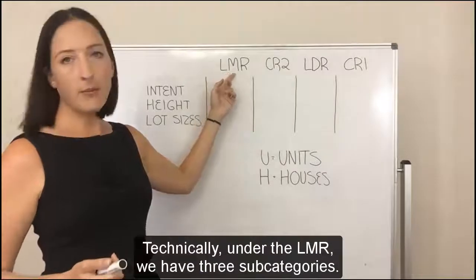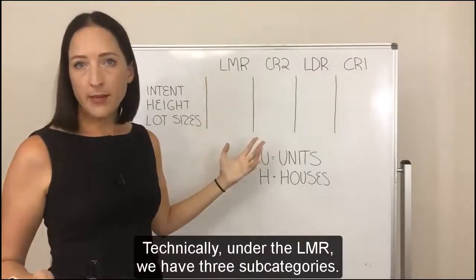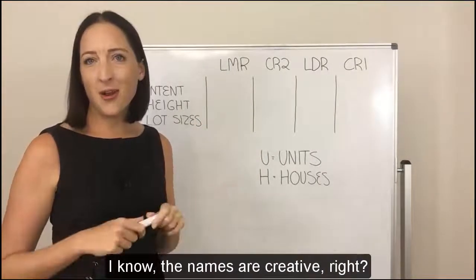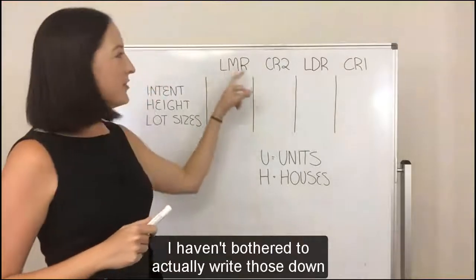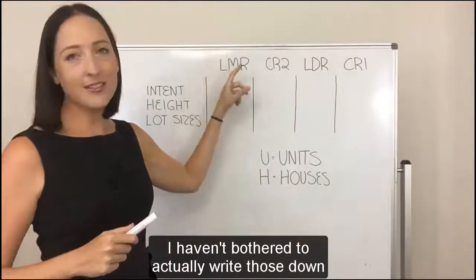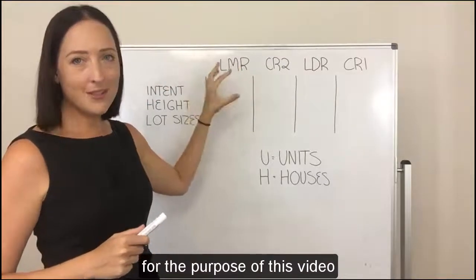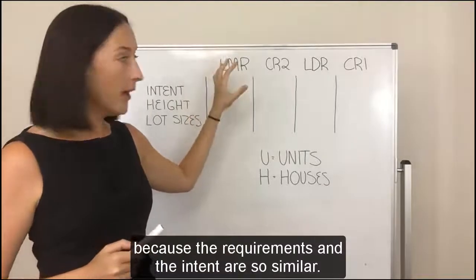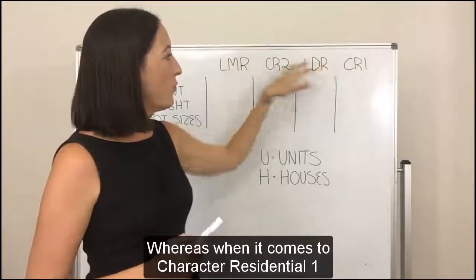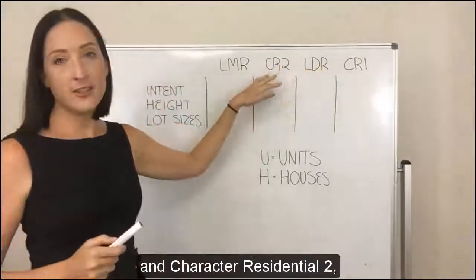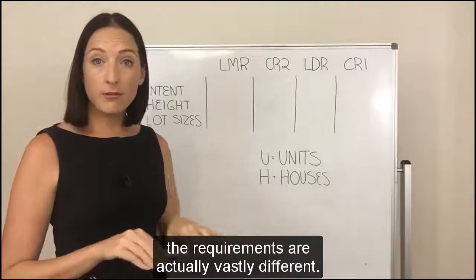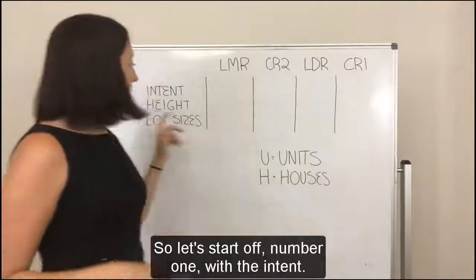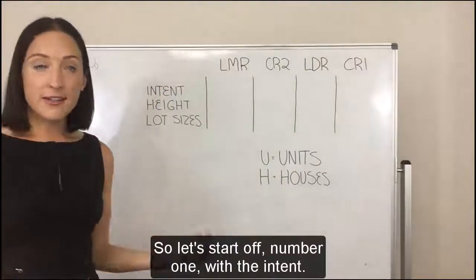Technically under the LMR we have three subcategories: 1, 2, and 3. I know, the names are creative. I haven't bothered to write those down for the purpose of this video because the requirements and the intent are so similar, whereas when it comes to character residential 1 and character residential 2, the requirements are actually vastly different. So let's start off with the intent.